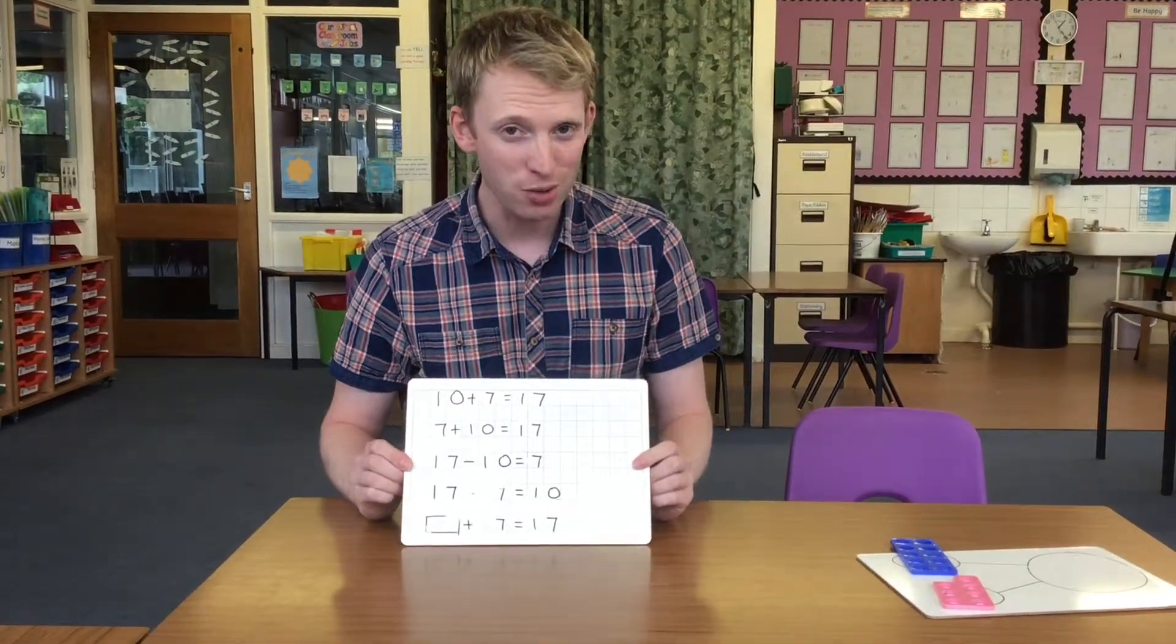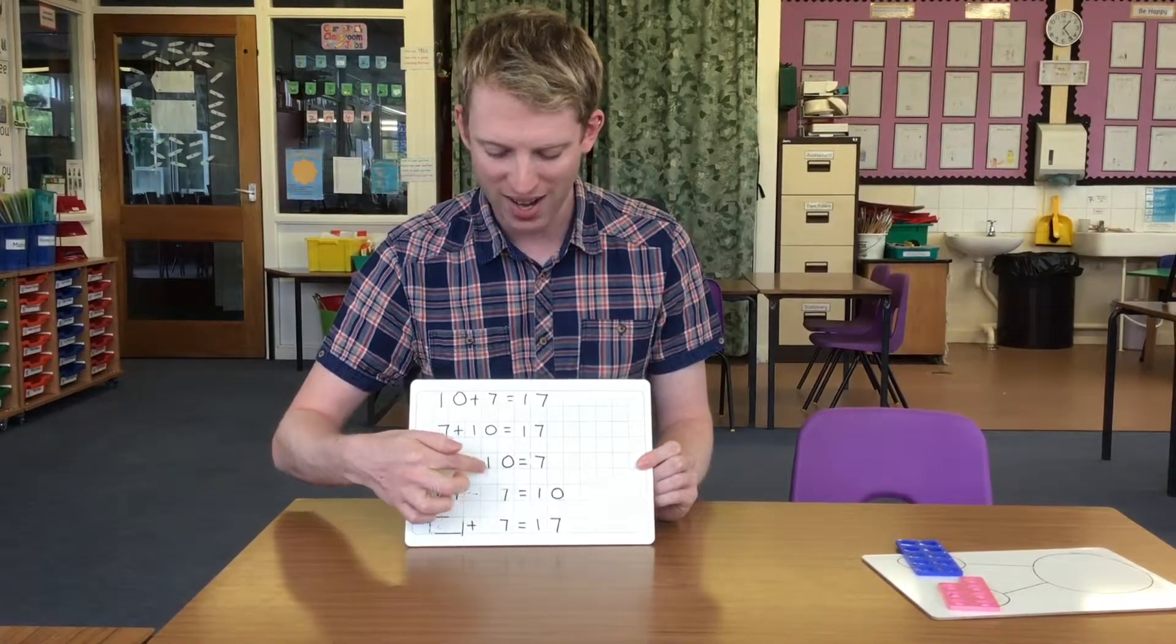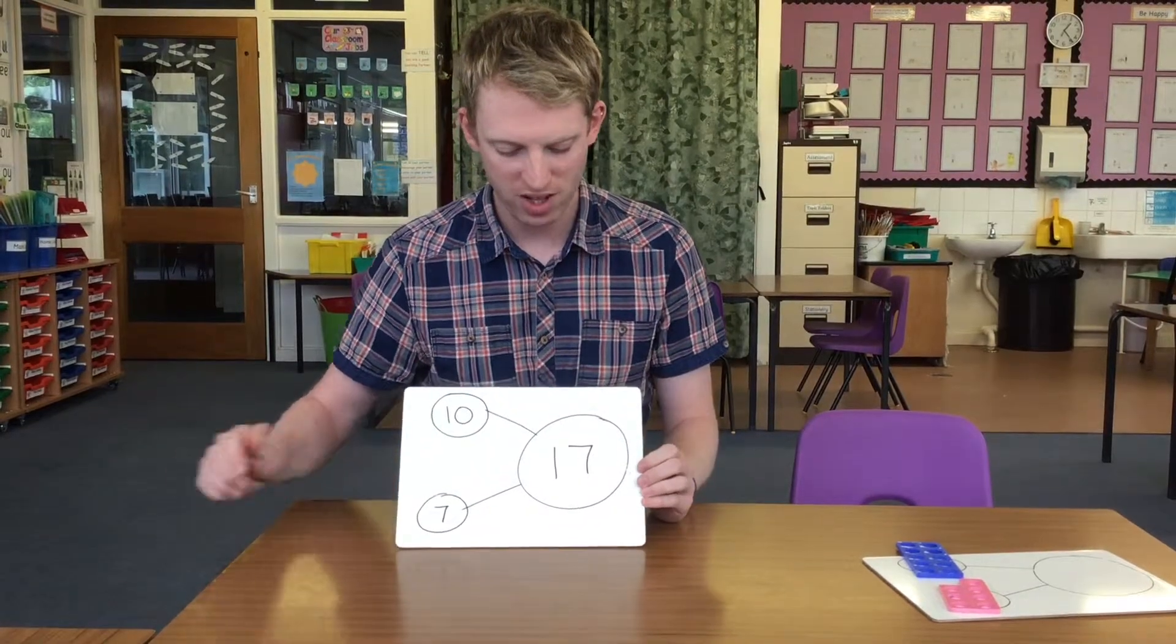But we can also look at subtraction. We've got 17 as our whole and we subtract 10, then we've got 7 after the equals.